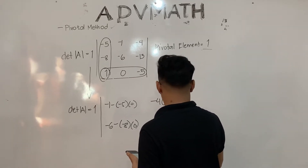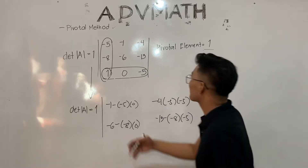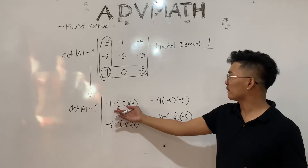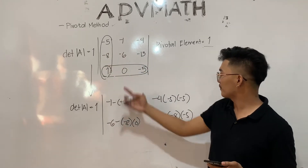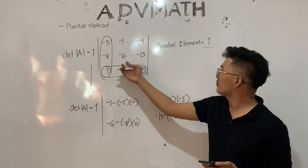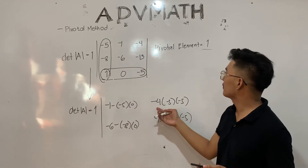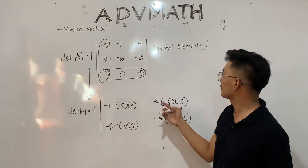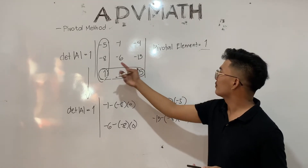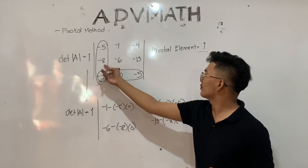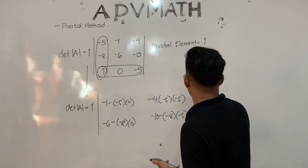So we have: negative 1 minus negative 5 multiplied by 0, negative 6 minus negative 8 multiplied by 0, negative 4 minus negative 5 multiplied by negative 5, and negative 13 minus negative 8 multiplied by negative 5.